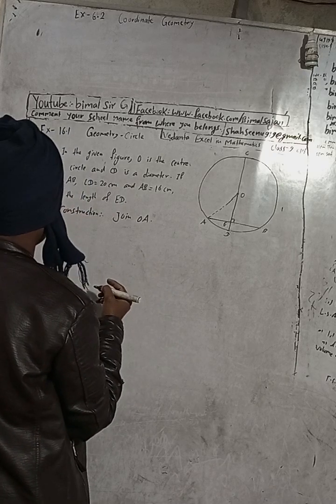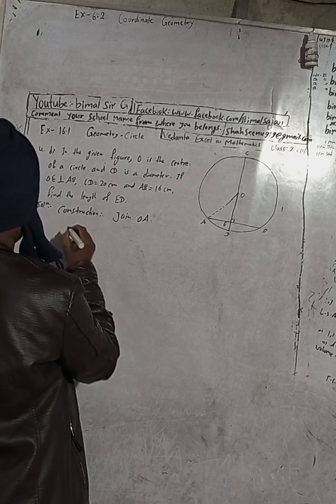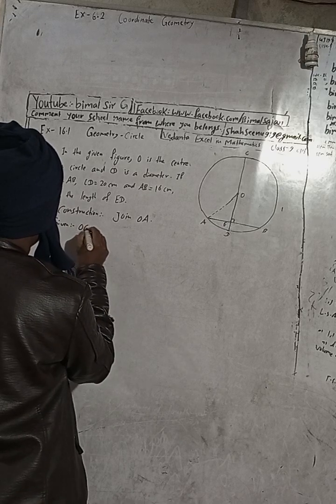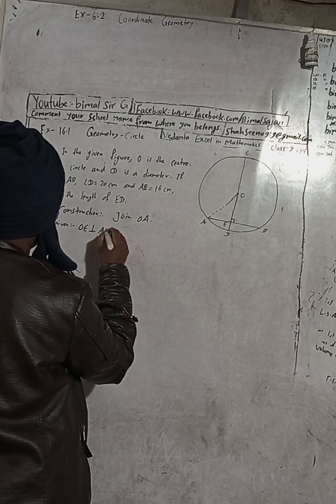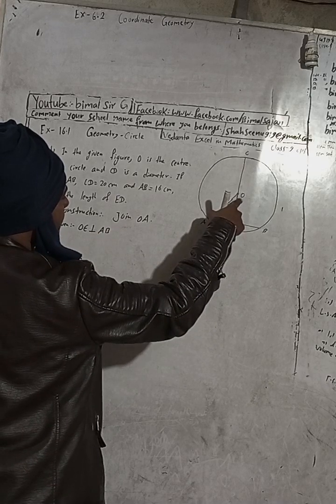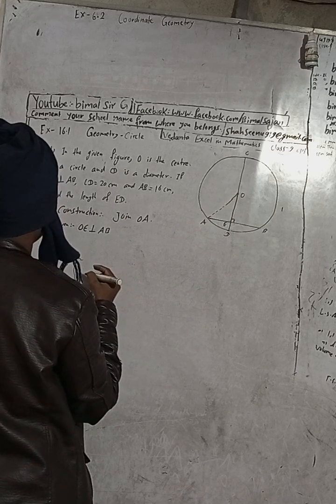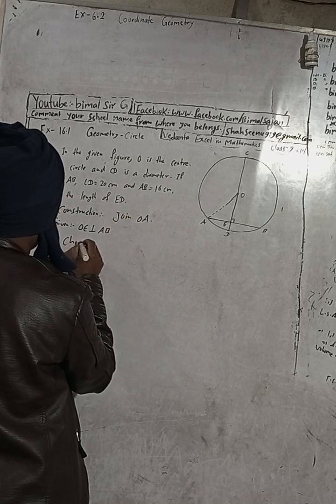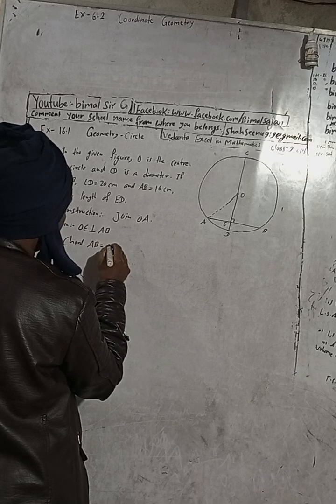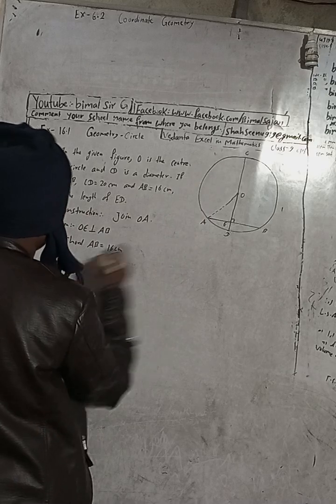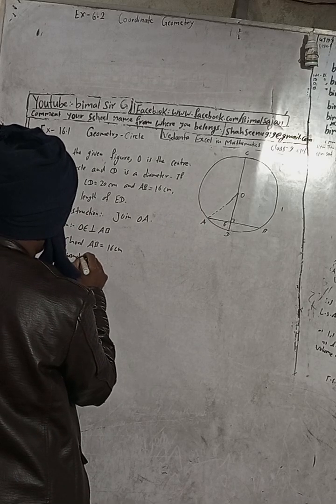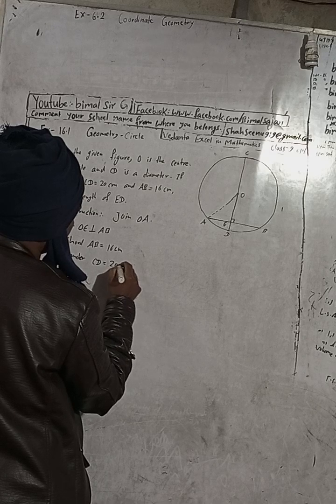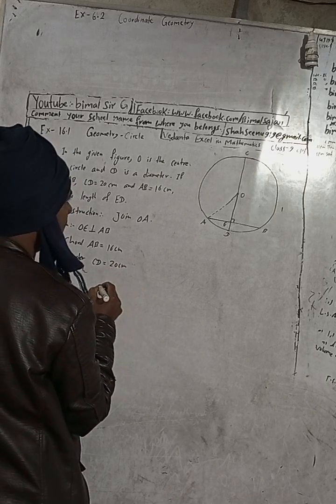Now, writing the given information: OE is perpendicular to AB, meaning OE is the distance of the chord from the center. CD is the diameter. AB is the chord, and AB is equal to 16 cm. CD is the diameter and is equal to 20 cm.